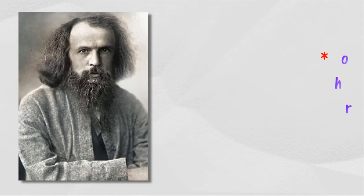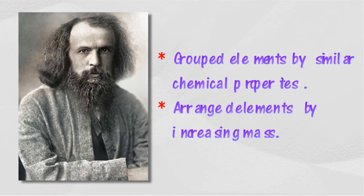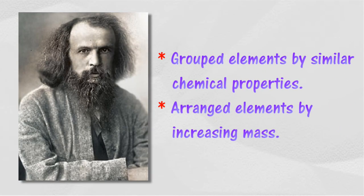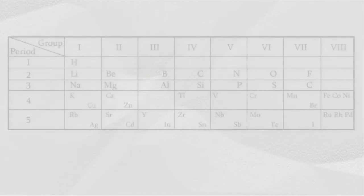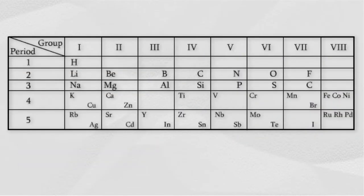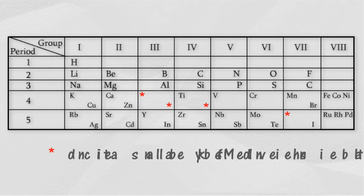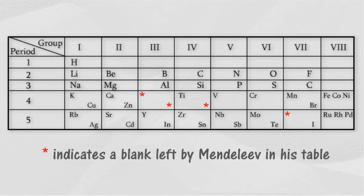Dmitri Mendeleev arranged elements according to the order of increasing atomic mass, grouping elements with similar chemical characteristics together. He left empty spaces for elements that had yet to be discovered, and his predictions about the characteristics of those unknown elements were later found to be true.